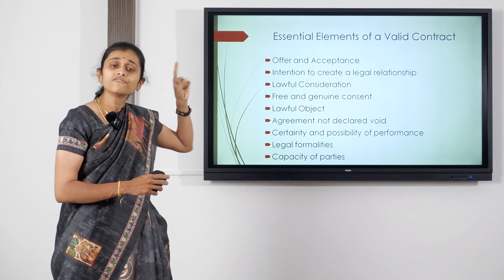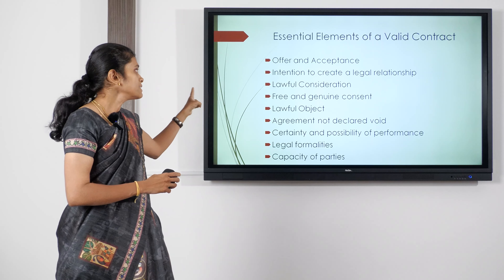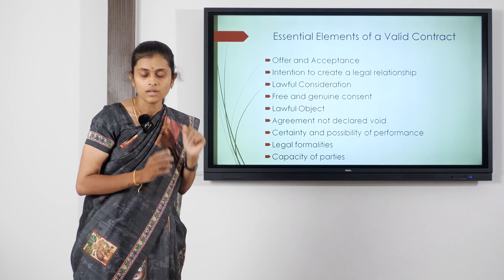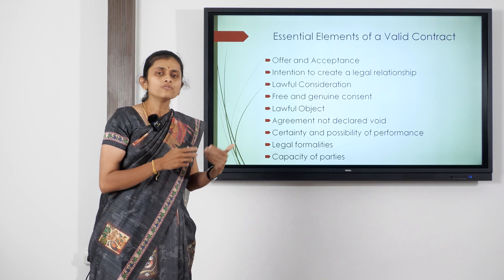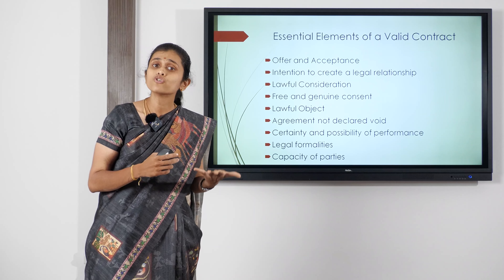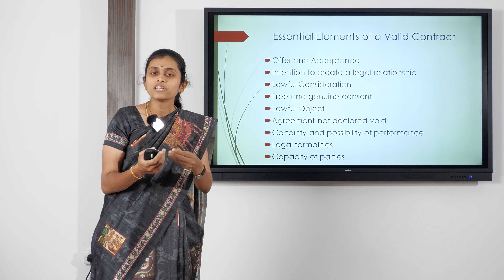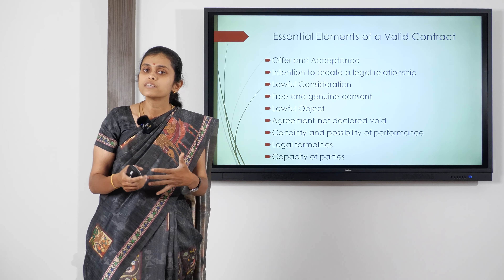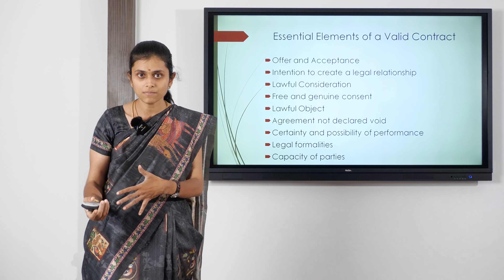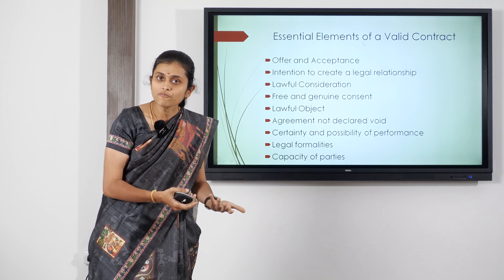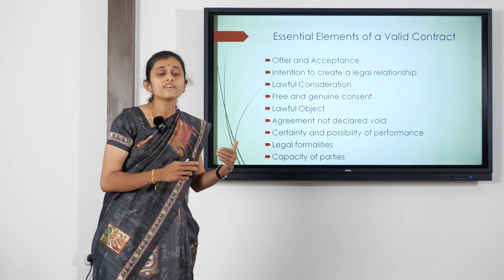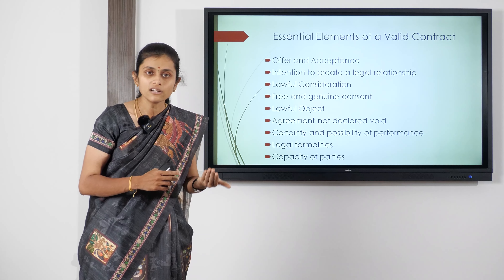The second essential element is intention to create a legal relationship. A contract should be entered into by both parties to create a legal obligation, not a social obligation. For example, if a person invites another person for dinner and that person accepts but doesn't turn up, the person cannot sue — so the intention of a contract must be to create a legal relationship.